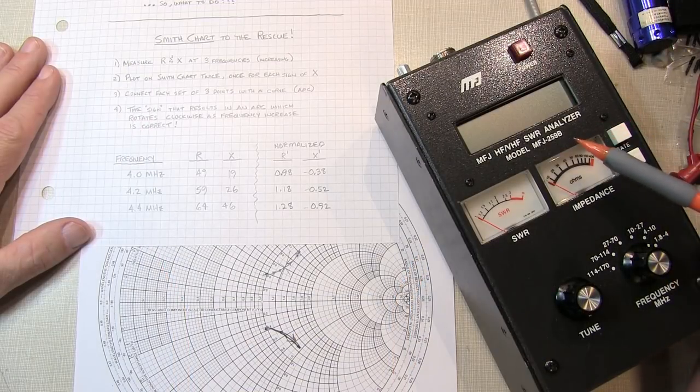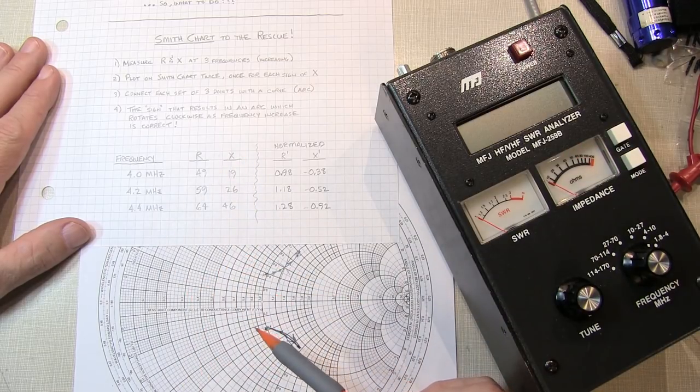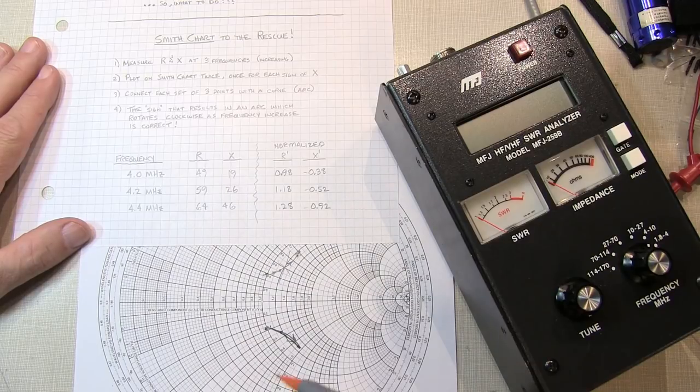And there you have it. If your analyzer is like this MFJ259B and does not give you the sign of the reactive component, you can follow this simple process and determine that for sure by yourself.